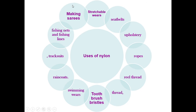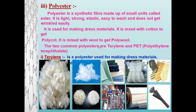Polyester is a synthetic fiber made up of small units called esters linked in a particular fashion. It is light, strong, elastic, easy to wash, and does not wrinkle easily. School uniforms are typically not pure cotton but polycott — a mixture of polyester and cotton — so they are comfortable in summer yet easy to maintain without constant ironing.